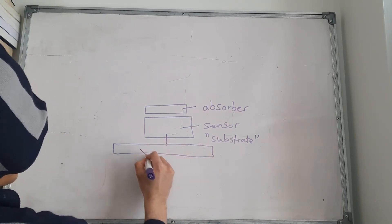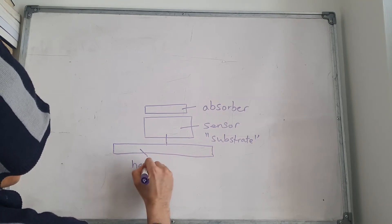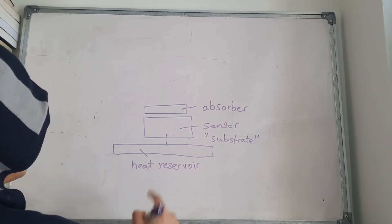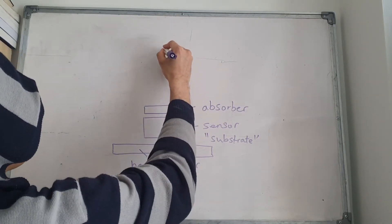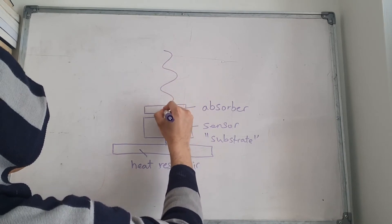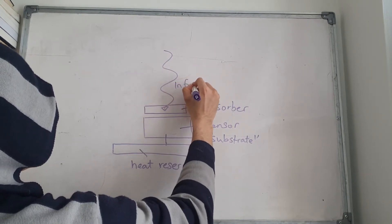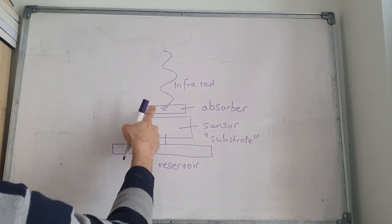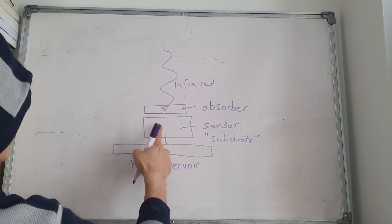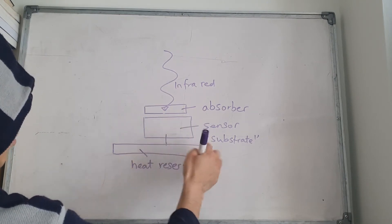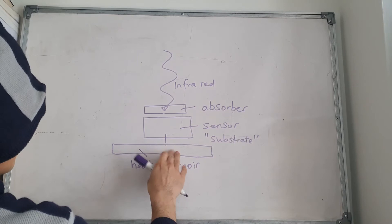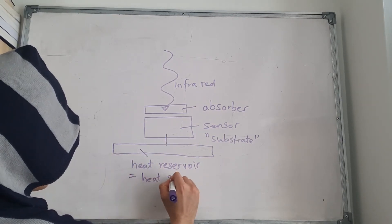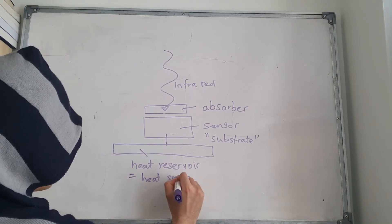So let's label this: this is the heat reservoir, and this is the absorber. Infrared light is coming in, hitting the absorber, and the absorber is connected to the sensor or substrate, which in turn is connected to the heat reservoir — a heat source.